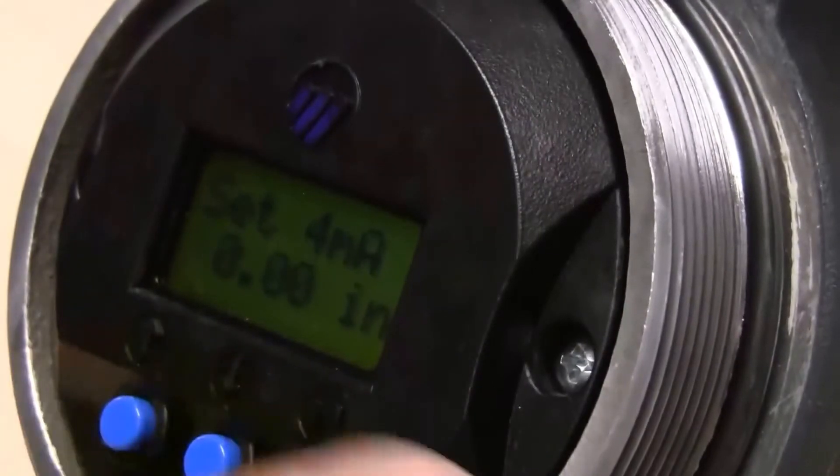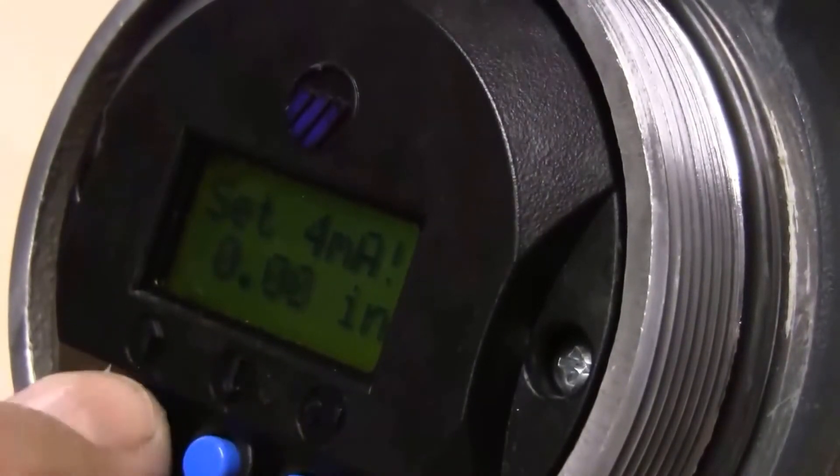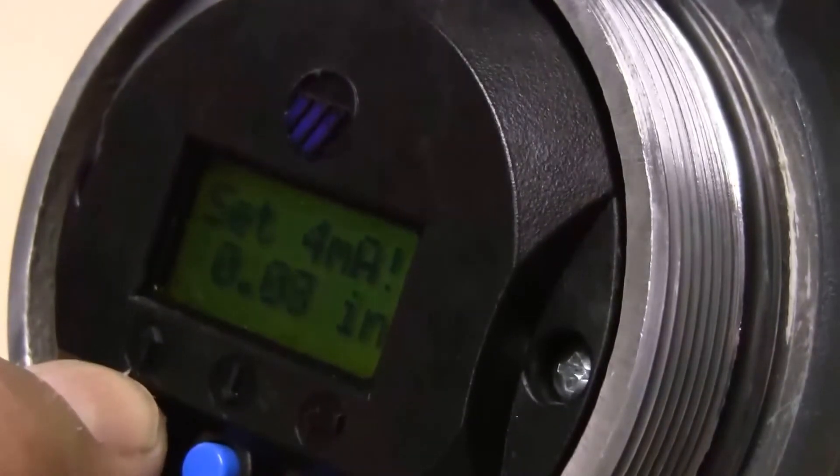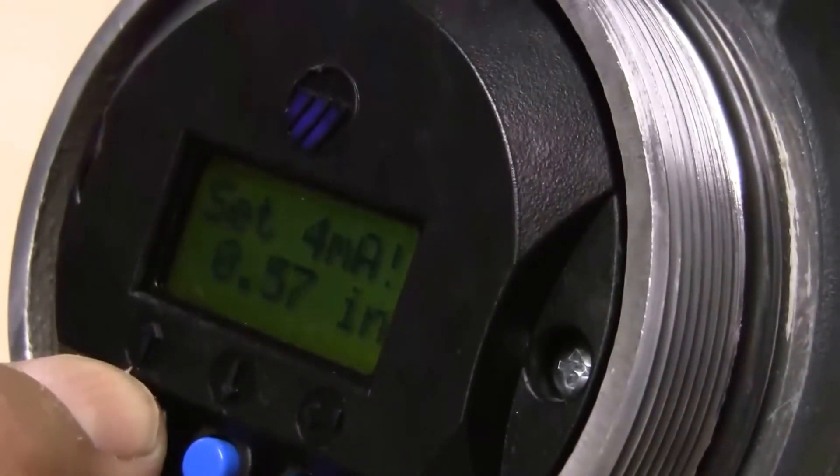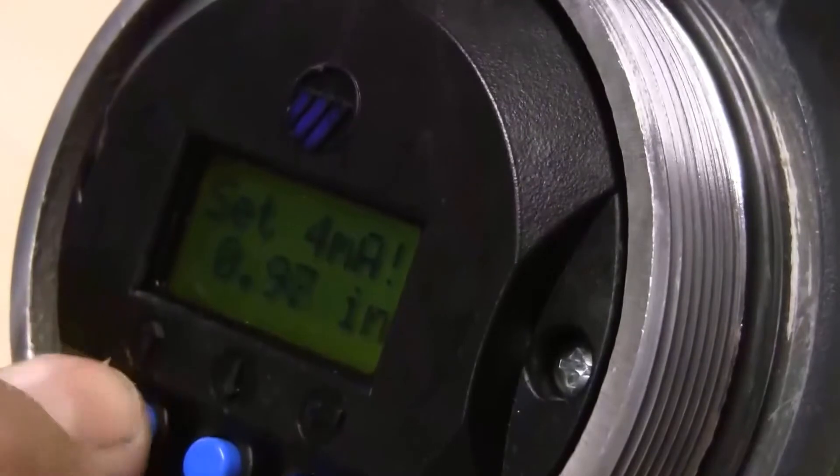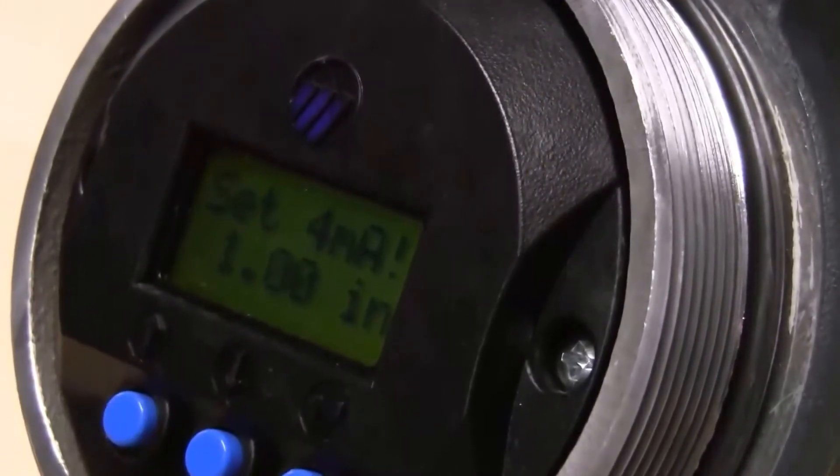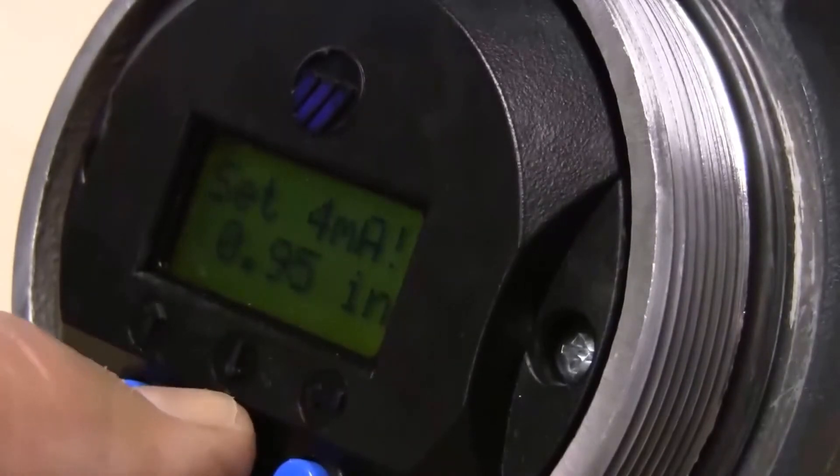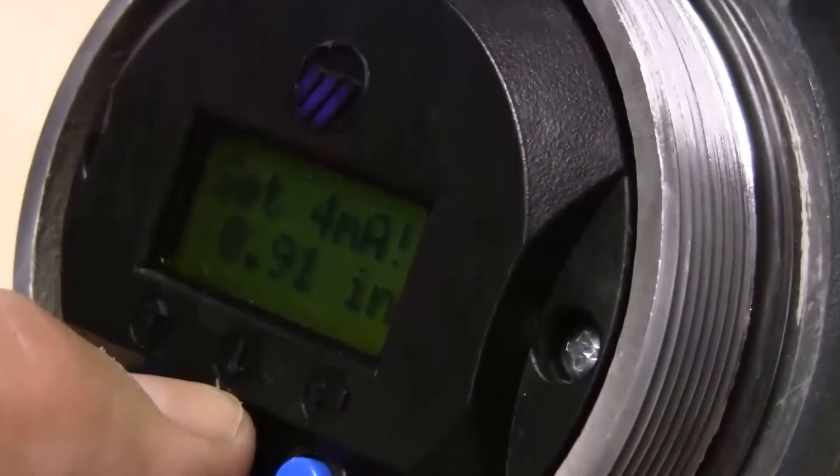And I want zero inches on the displacer to give me a four milliamp output. If I wanted it to be something else, I could simply enter and raise that up. If I wanted zero inches on the displacer, or if I wanted, let's say one inch on the displacer to give me four milliamps, I could change that and enter it in that way. We'll keep this at zero right now. So bottom of the displacer will give us four milliamps.